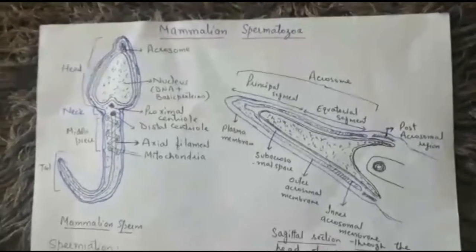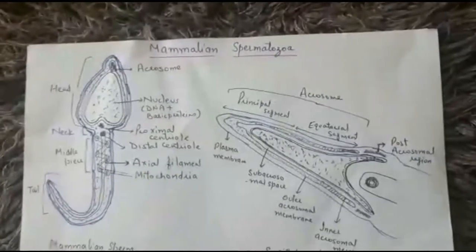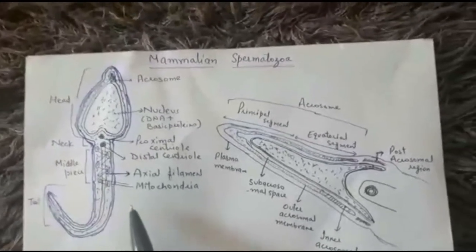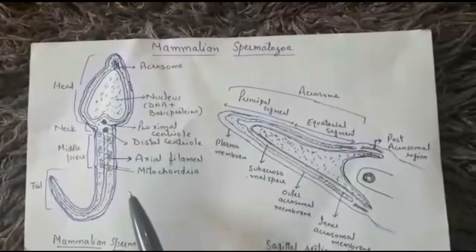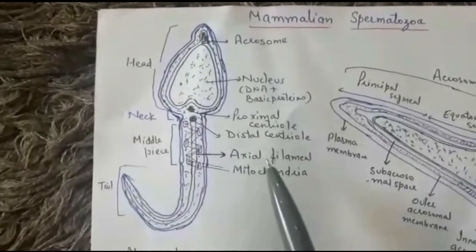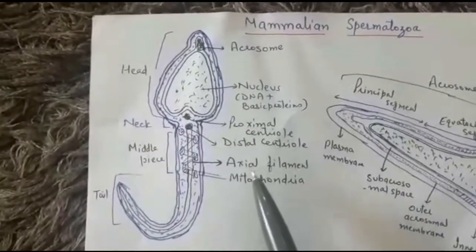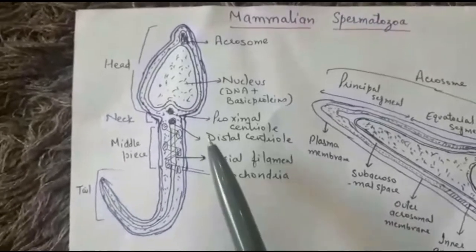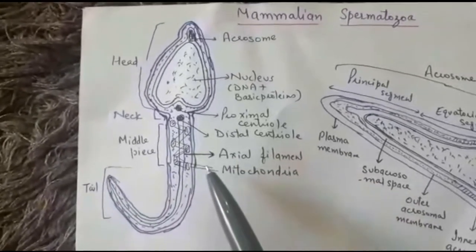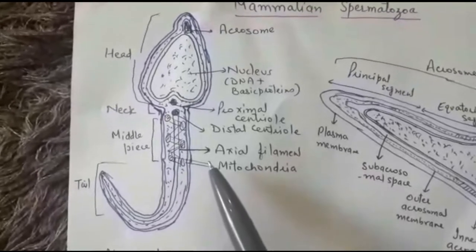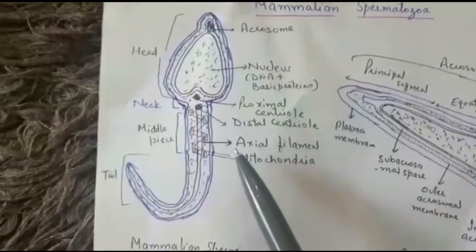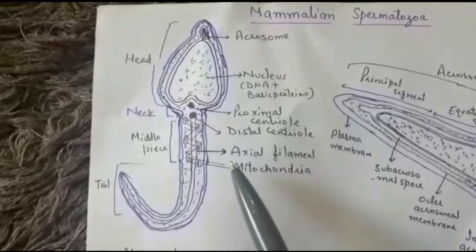Hello dear students, we have already covered spermatogenesis. Today in this video we will study the structure of mammalian spermatozoa and some important terms related with it. Spermatozoa — sperm — is a highly specialized cell. Its specialization is meant for two purposes: it has to reach the egg, and it has to enter into the egg during fertilization.